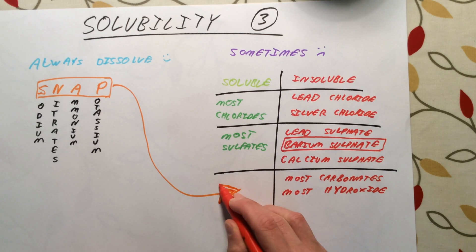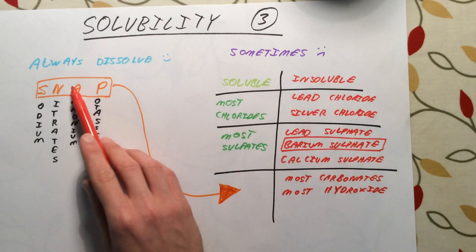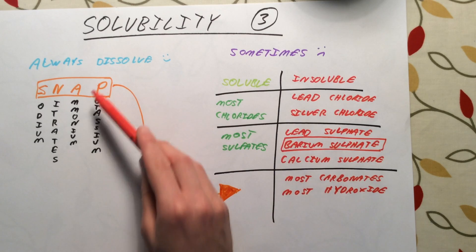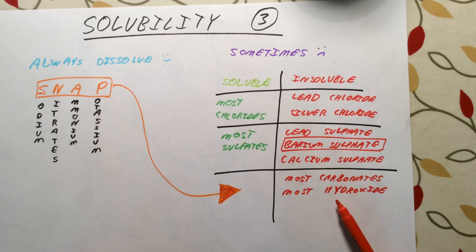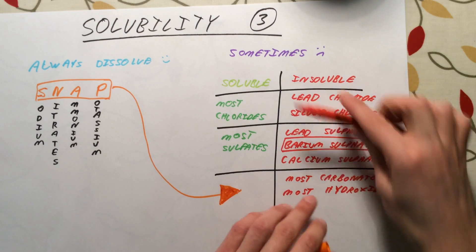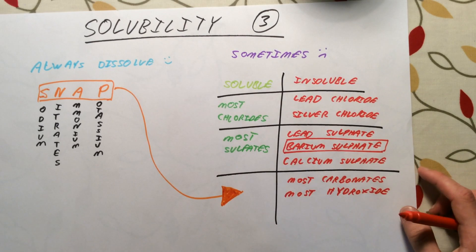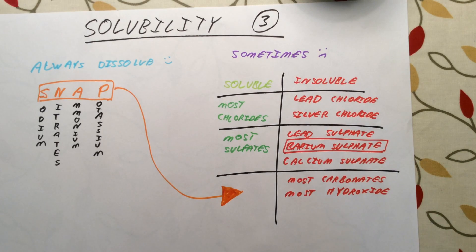If you remember this SNAP rule first, it makes it a bit easier. Sodium carbonate will dissolve in water because it is in the always-dissolve list. Sodium hydroxide will dissolve in water. Ammonium hydroxide and carbonate will dissolve. Potassium carbonate and hydroxide will dissolve. So that does make it easier to remember. It just gives us one, two, three, four, five exceptions to learn. Please write this out, please learn it, and it will hopefully get you at least a couple of marks on the exam.